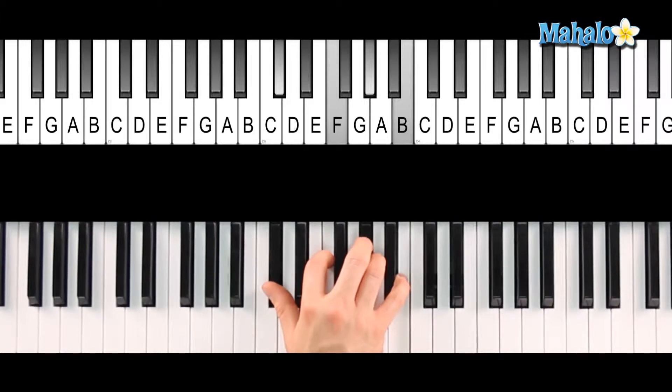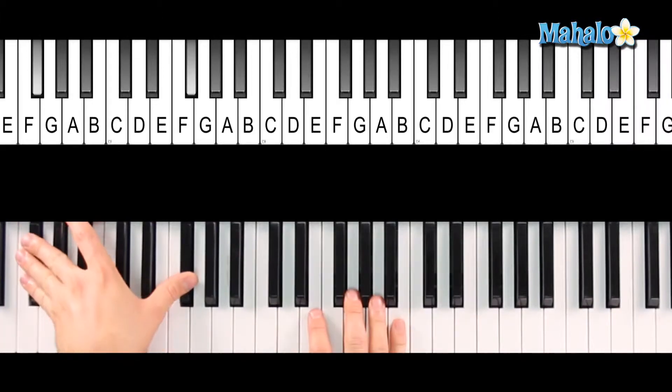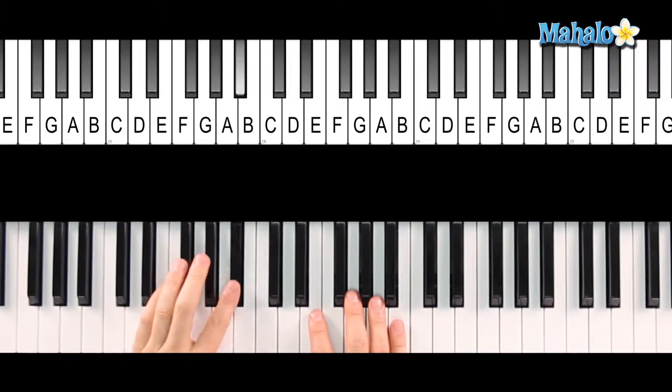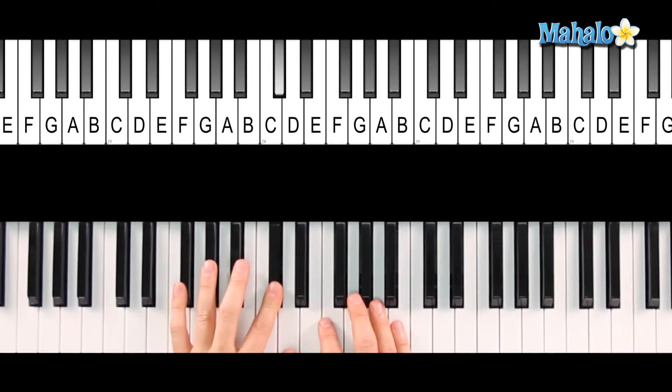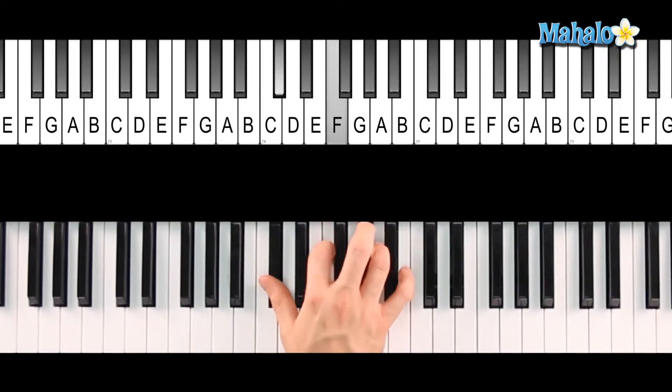So how that functions is if we're in the key of F-sharp, okay, 1, 2, 3, 4, 5, go up five steps, it's the fifth degree of the scale. So we call it like a 5-7 chord, and that's our dominant 7.